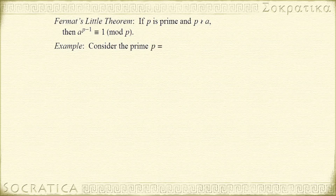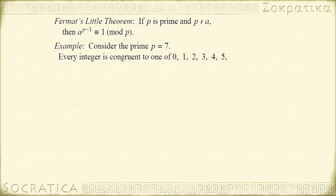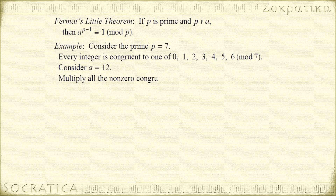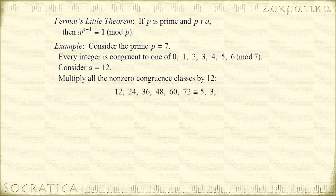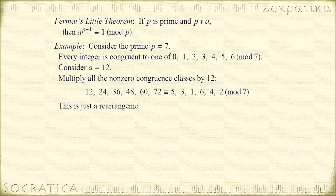Consider the prime p equals 7. Every integer is going to be congruent to 0, 1, 2, 3, 4, 5, or 6 mod 7. Now, let's disregard 0 — we're only going to look at the non-zero numbers. Consider the case where a equals 12. Look what happens if we multiply all these numbers by 12: we get 12, 24, 36, 48, 60, and 72. If you simplify these mod 7, you get 5, 3, 1, 6, 4, and 2. Notice it's just a rearrangement of the numbers 1 through 6. That's the trick: if you multiply the congruence classes by a, it simply rearranges them.